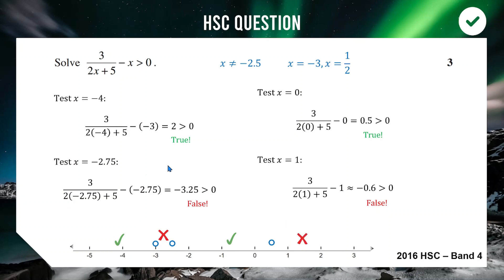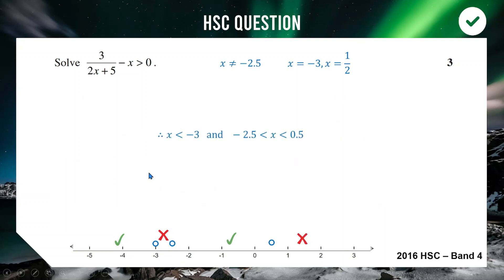Our final solution is x < −3 and −2.5 < x ≤ 1/2. If you got the same expressions, congratulations — you just earned 3 marks from the 2016 HSC exam.